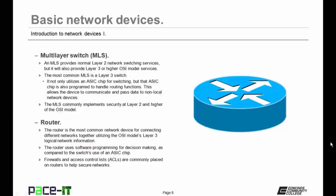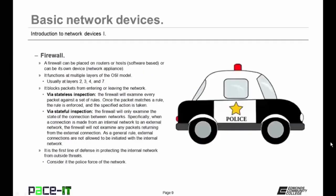Then we have the router. The router is the most common network device for connecting different networks together, utilizing the OSI model's Layer 3 logical network information. Unlike the switch, which uses an ASIC chip, the router uses software programming for decision making. Firewalls and access control lists are commonly placed on routers to help secure networks. Speaking about firewalls, a firewall can be placed on routers or hosts, meaning it would be software-based, or a firewall can be its own device — usually in that case it's a network appliance.